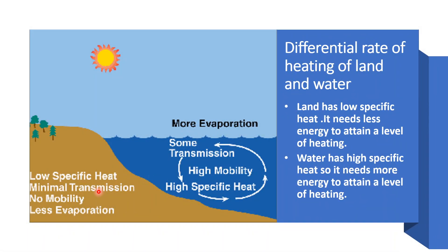It has also been found that land has got low specific heat. So, it needs less energy to attain a level of heating. However, water has got a high specific heat capacity. So, it needs more energy to attain a level of heating.